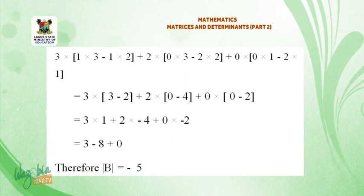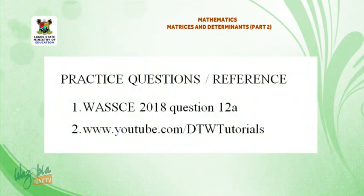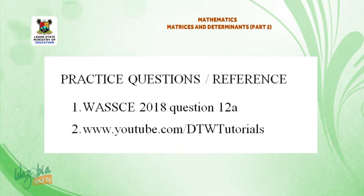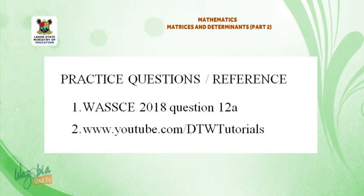Therefore, determinant of B equals minus 5. Practice questions and references: 1. WAEC 2018 question 12a. 2. www.youtube.com/dtwutorials. Thank you for listening. Bye for now.